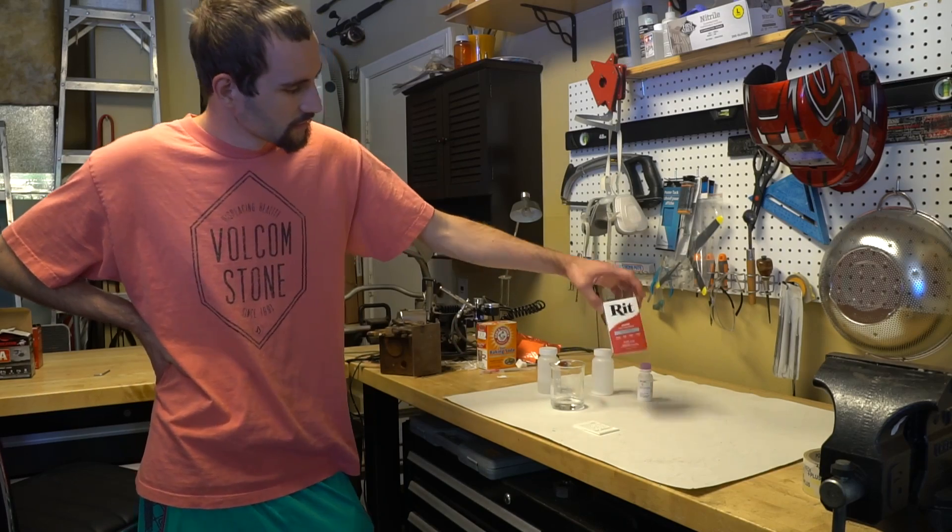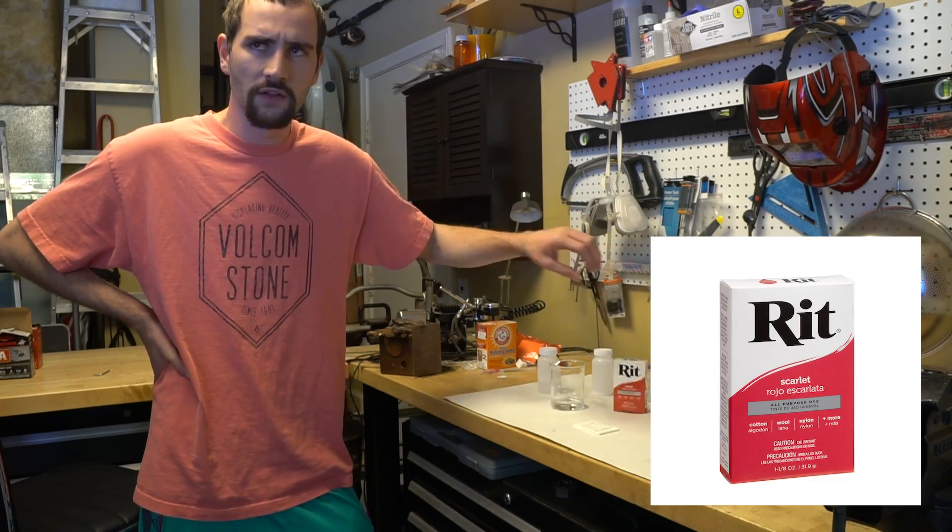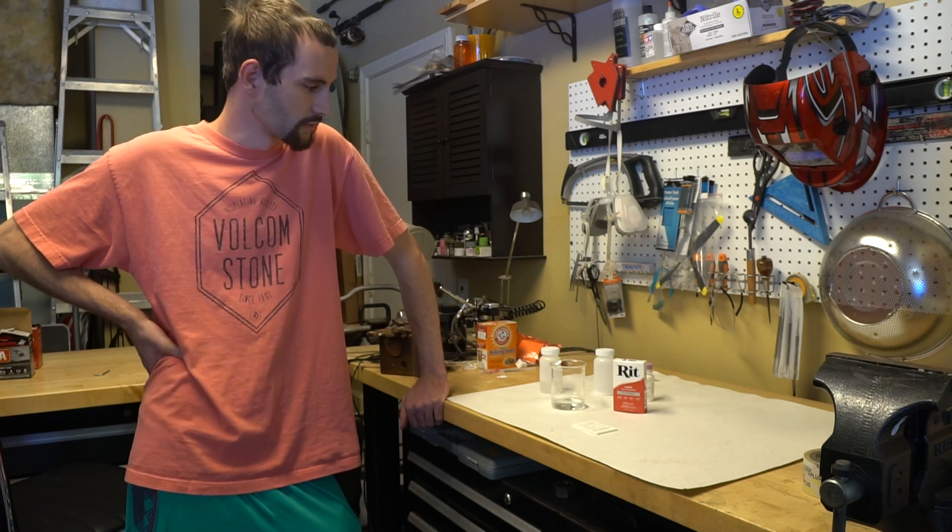I went out and bought this — it's Rit dye, basically a powdered clothing dye used for tie-dye and similar things. The reason we did this was not to disprove that oleic acid was needed, because we pretty much showed it wasn't, but just to see if the surfactant — the propylene glycol — was needed. This is a powder, so it has none of that; it's just a salt-based coloring.